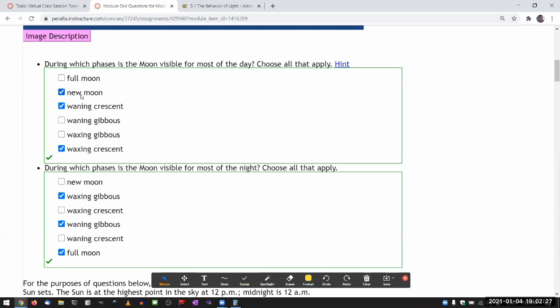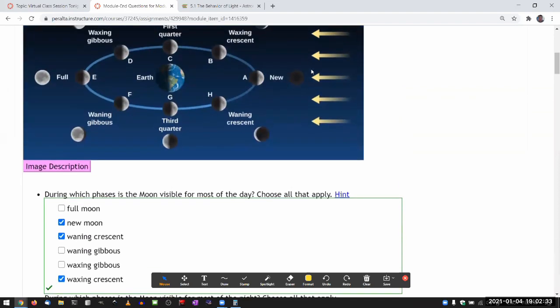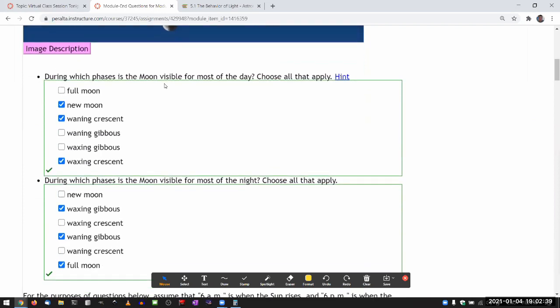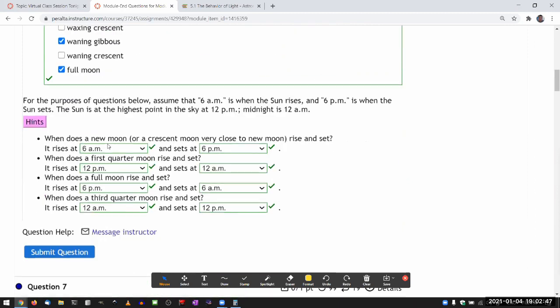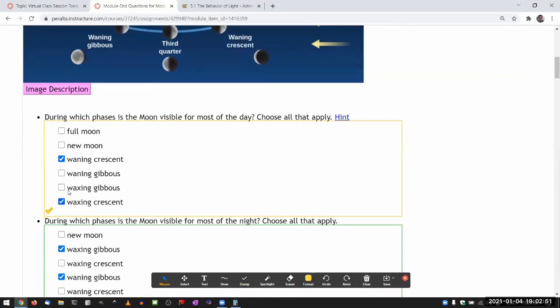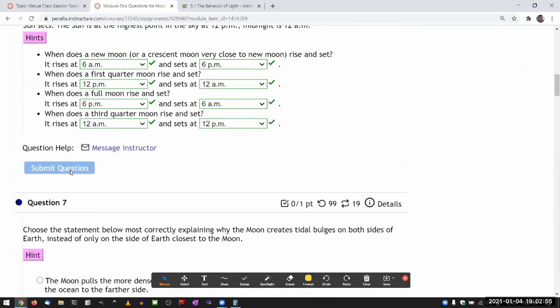So new moon technically isn't visible, but I mean, it's not visible in the sense that it's up in the sky, but you can't really see because it's so dim. But the way the question is coded is to accept the new moon as one of the answers. Let me just double check. It might be that. Yeah, so it's just coded so that new moon is one of the answers.